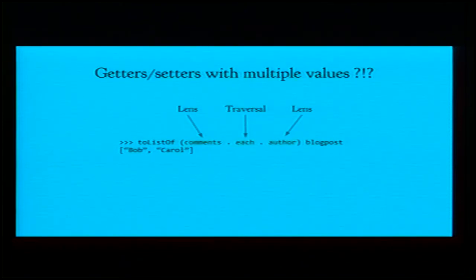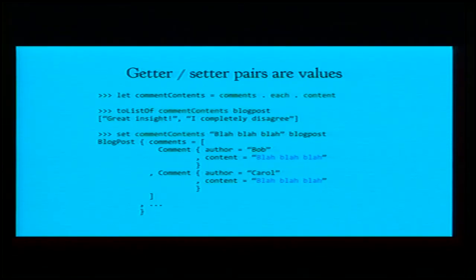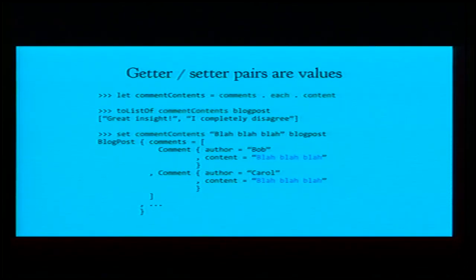You can combine two lenses with a dot — a lens pointing to the author of a blog post combined with a lens pointing to the name of an author gives you the author's name. Where it gets interesting: lenses can also be used as getter/setters for multiple values. 'comments' is a traversal pointing to the list of comments, so 'comments.each' points to every single comment. You can combine it with another lens to get every single comment author. Traversals are just values, so you can store them in a variable.